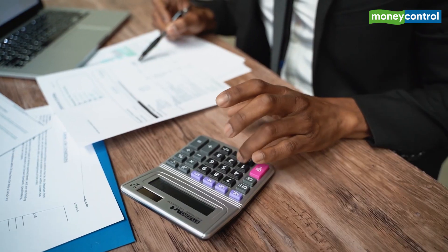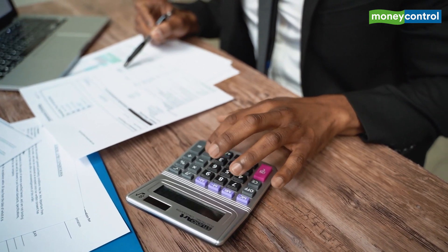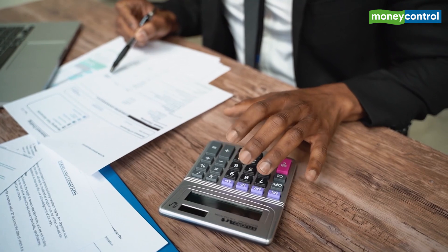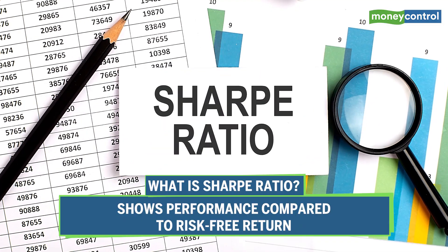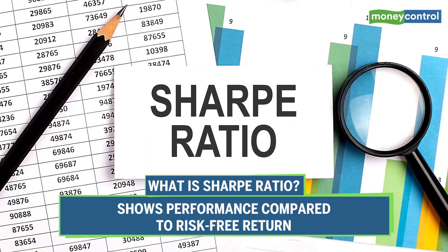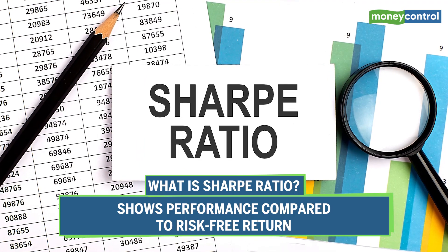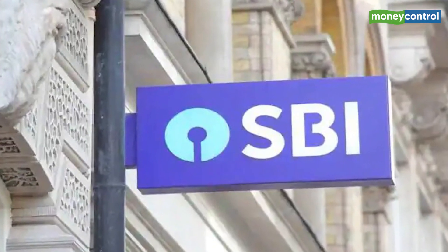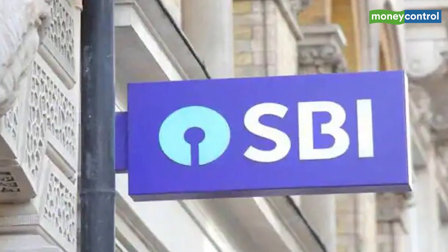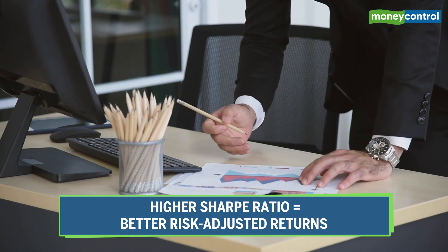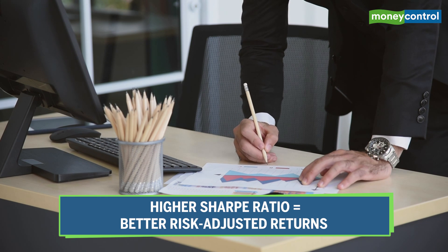This deviation from the norm is the risk which mutual funds carry, and a comparison of the standard deviations of various schemes can help investors determine which is riskier. Savvy investors also use the Sharpe ratio, which reveals how well your mutual fund portfolio has performed in excess of the risk-free return. For example, taking an SBI bank FD as the risk-free rate in India, this ratio tells you whether your scheme returns are due to better investment decisions or excessive risk taken.